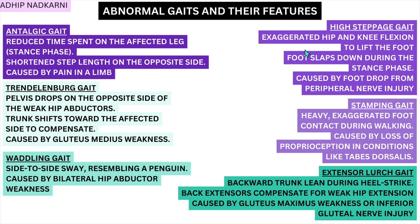After this we go to stamping gait, where there is heavy exaggerated foot contact during walking. This is caused by loss of proprioception in conditions like tabes dorsalis. When there is loss of proprioception the person almost feels like they are walking on cotton — not getting enough sensation. To compensate they hit their foot hard on the ground so they feel that pressure, which is why you see this stamping compensation.